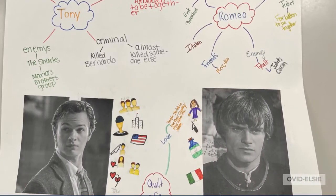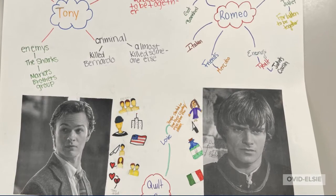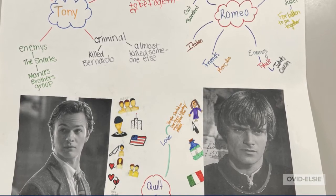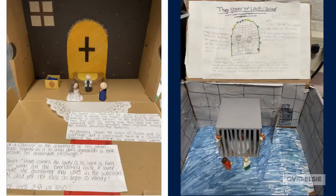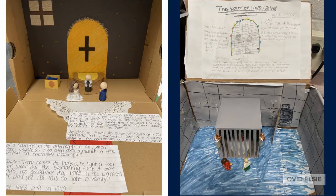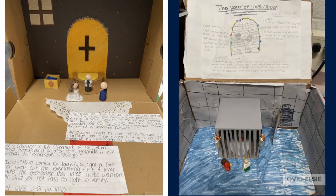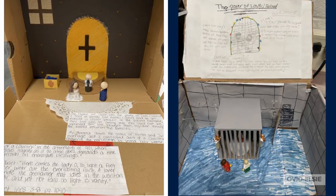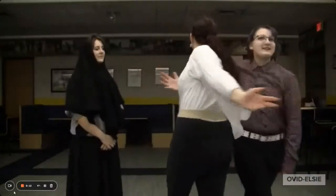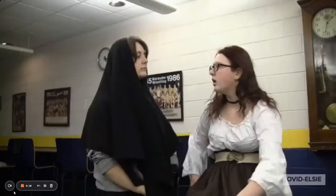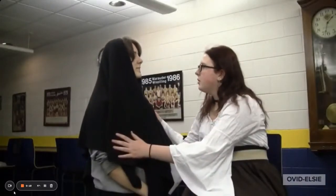Freshmen in English 1 read A Quilt of a Country, Romeo and Juliet, and watched West Side Story. They then picked a theme that connected to all three works. From that, they were able to choose a project that reflects the theme using quotes to connect the works. Students made dioramas, self-portraits, and videos to show their thinking.